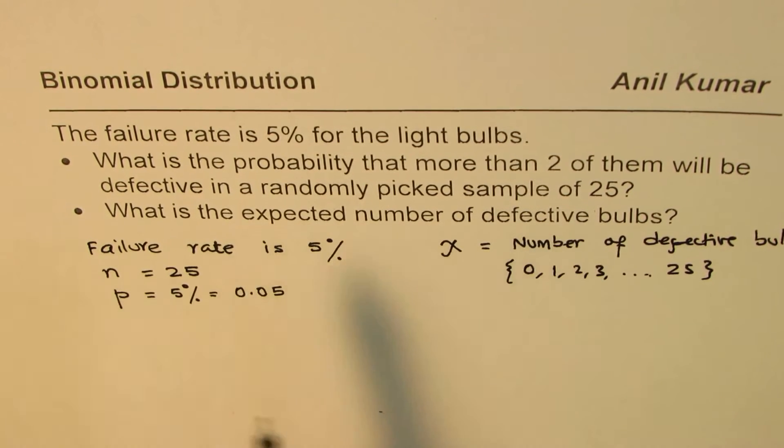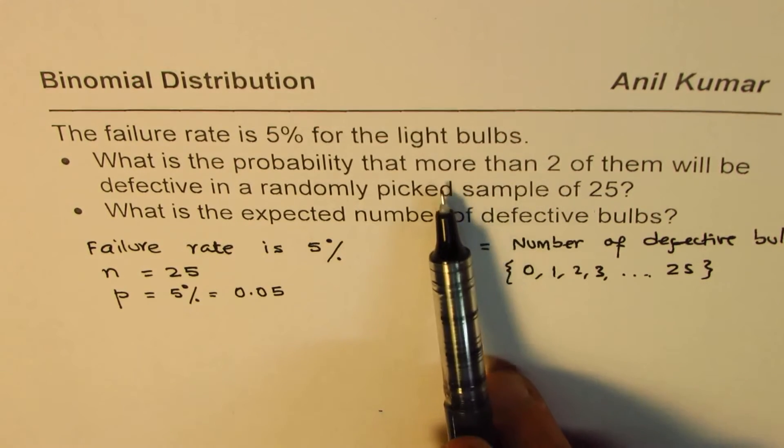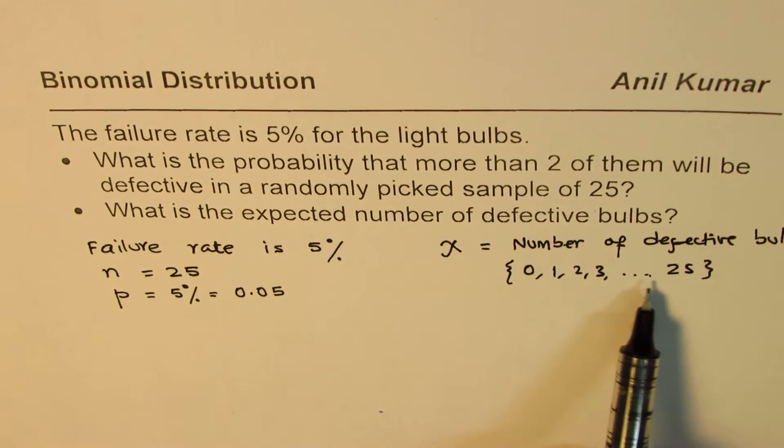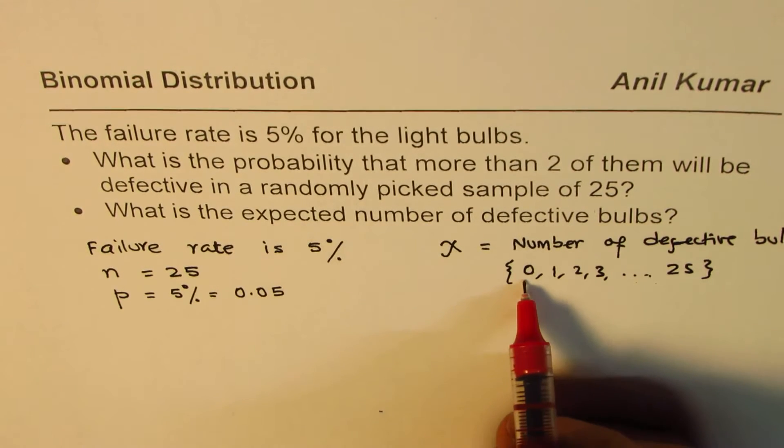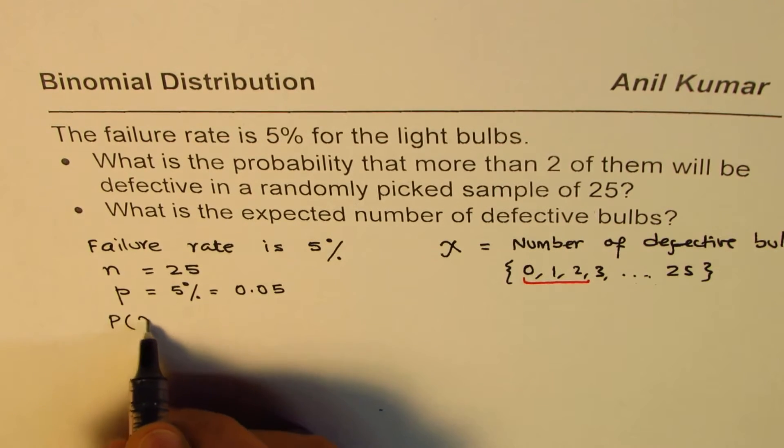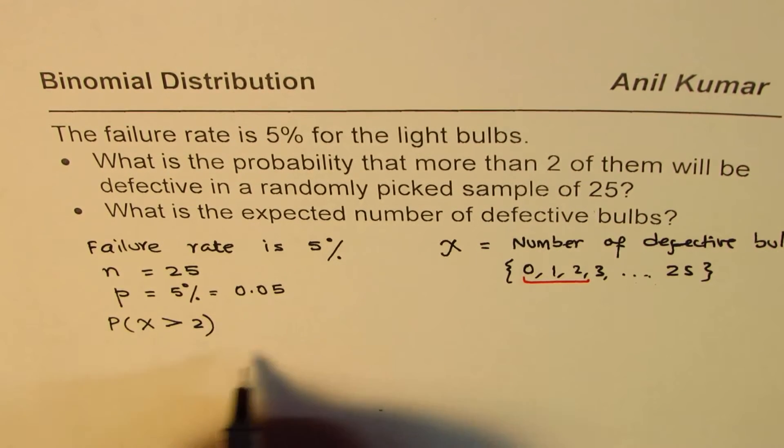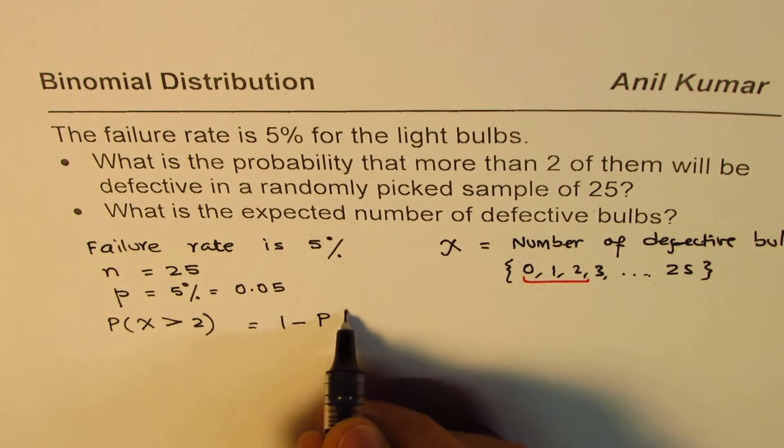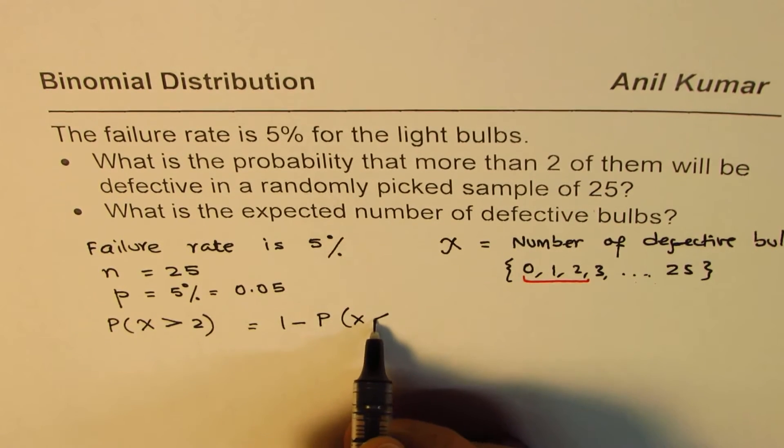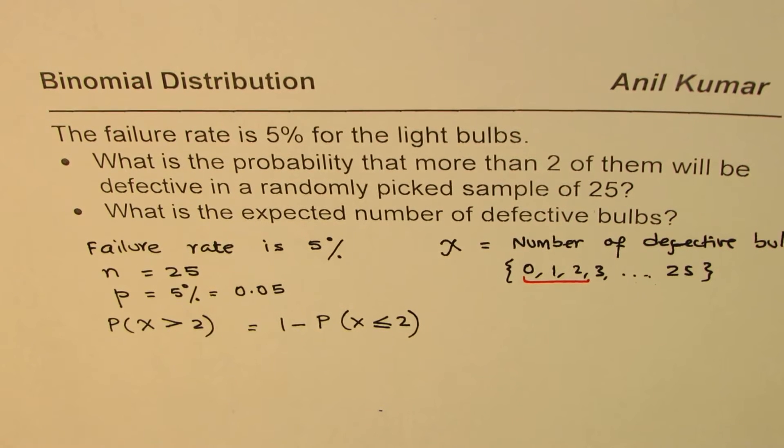The question asks what is the probability that more than 2 of them will be defective. In such questions, we find the probability for 0 defective, 1 defective, or 2 defective and take away from 1. We are saying that the probability for X to be greater than 2 is equal to 1 minus the probability for X less than or equal to 2. That is the approach.